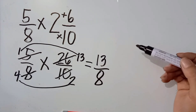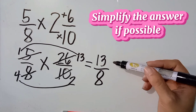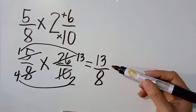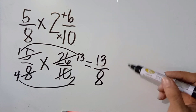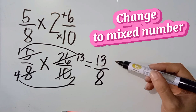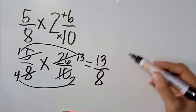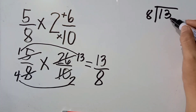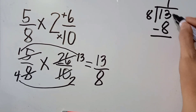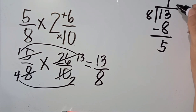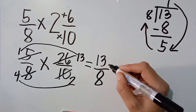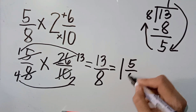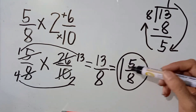So, the last step, we are going to simplify the answer if possible. Nakasimplify na po bang 13 over 8? Wala na sila kasing common factor. So, simplify na po siya. Pero, ito po ay isang improper fraction. So, ang gagawin po natin, we are going to change this improper fraction to a mixed number. 13 divided by 8. So, 13 divided by 8, the answer is 1. 1 times 8, the answer is 8. 13 minus 8, the answer is 5. So, 13 over 8 will become 1, and ito po yung 5. So, the product is 1 and 5 over 8.